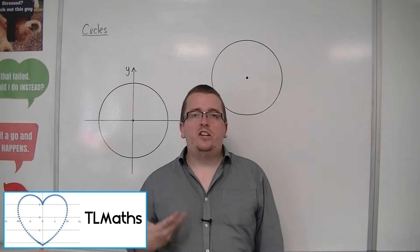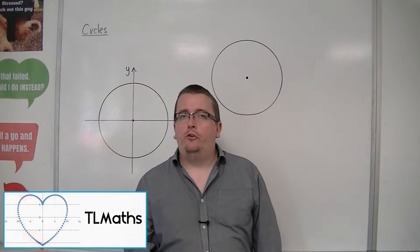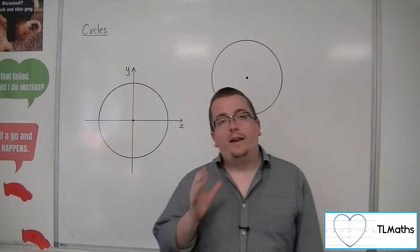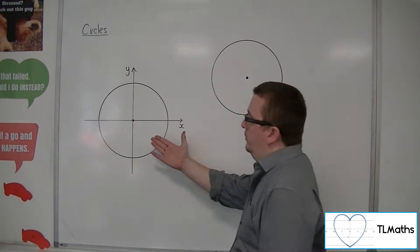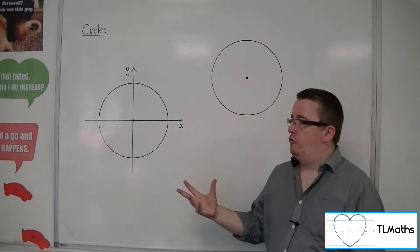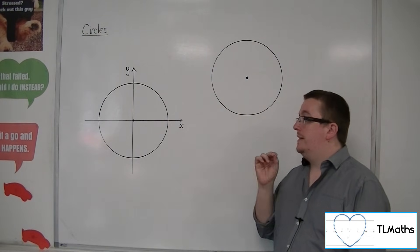With circles, we need to know what the general form of the equation of a circle is and how to interpret it. Here is a circle that I have centered at the origin, so it's got a center at (0, 0).